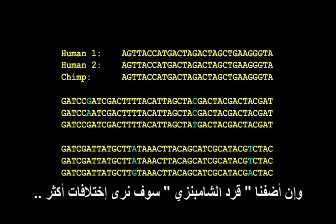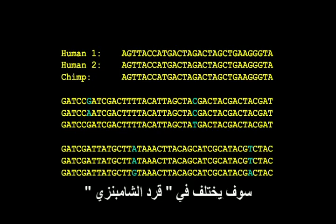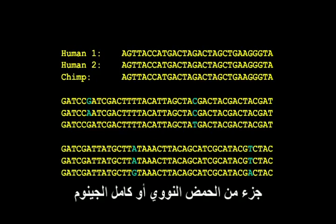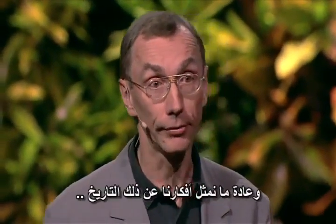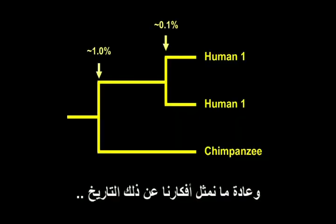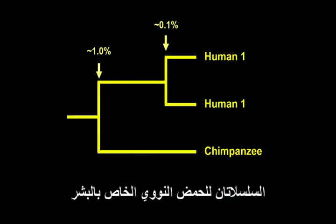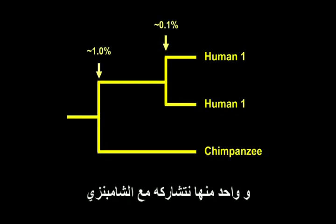If we add in a chimpanzee, we will see more differences — approximately one letter in a hundred will differ compared to a chimpanzee. And if you are then interested in the history of a piece of DNA or whole genomes, you can reconstruct the history of the DNA with those differences you observe. Generally we depict our ideas about this history in the form of trees like this — in this case, it's very simple.